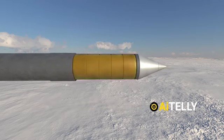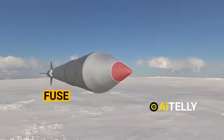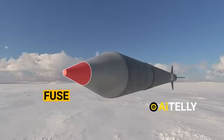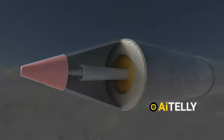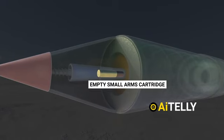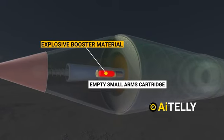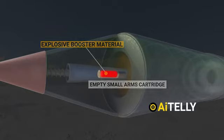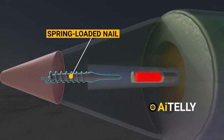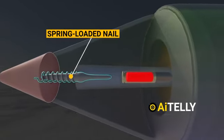Now let's focus on the fuse, a critical part of the rocket's design. It's a simple yet effective device consisting of an empty small arms cartridge filled with an explosive booster material. This material is set in motion by a spring-loaded nail, creating the mechanism that triggers the rocket's explosive payload.